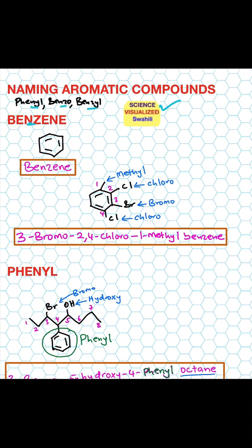So that's a simple benzene structure, but you can also have substituents like this one. You have a methyl group at position number one and a chloro at position number two. You arrange them alphabetically — bromine (B) comes before C, and then M is the last one. So you have 3-bromo, then 2,4-dichloro because we have chlorine at positions two and four — two chlorines — and then 1-methylbenzene. Benzene is the parent name.